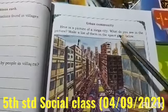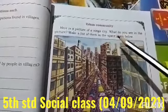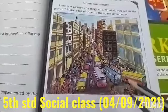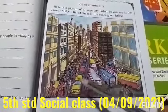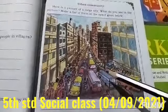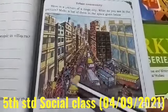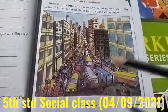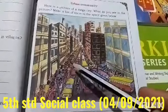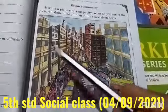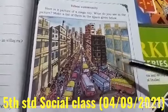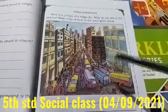Next is urban community. Here is a picture of a mega city. What do you see in the picture? Make a list of them in the space given below. In the picture you can see buildings which are skyscrapers, roads, companies, heavy traffic, and thickly populated roads.